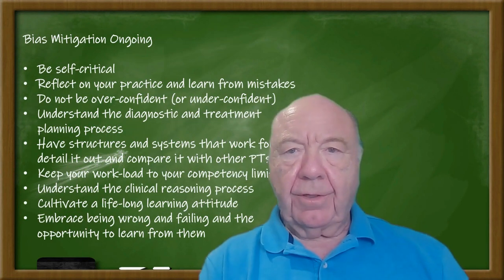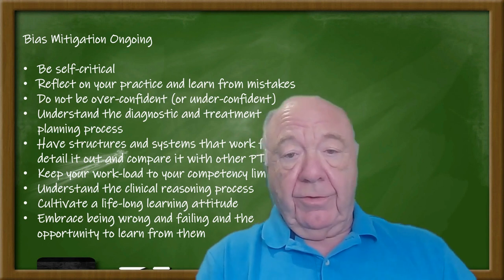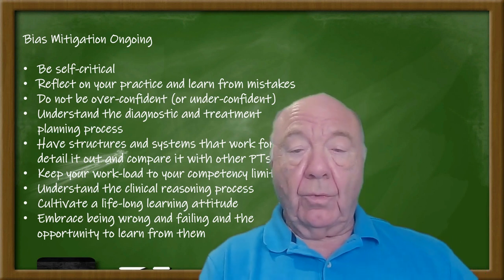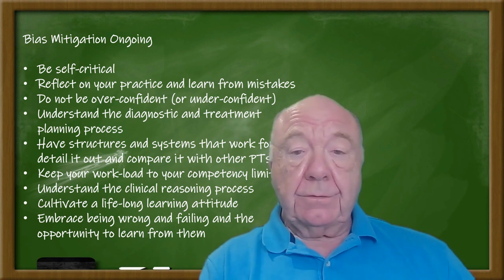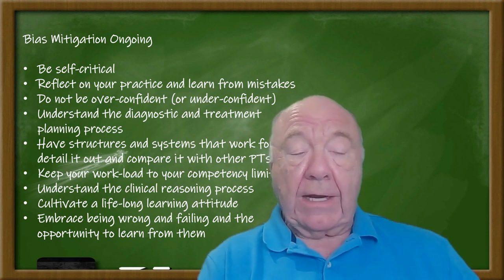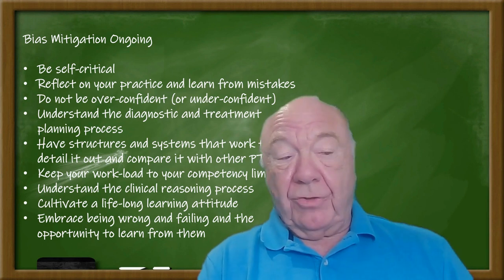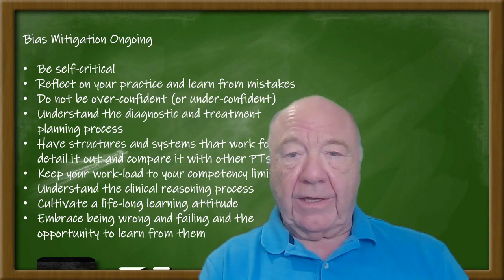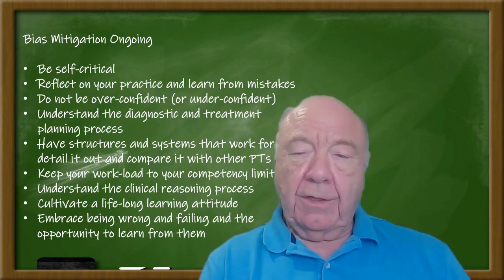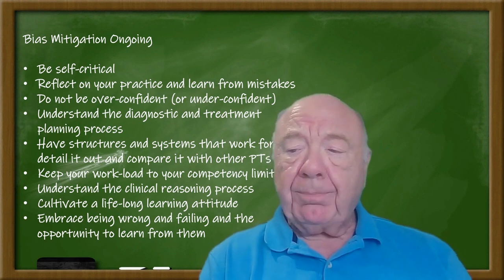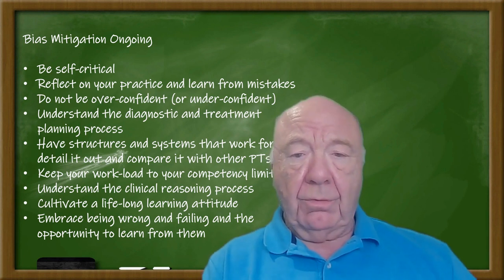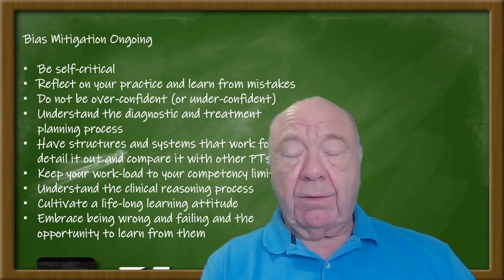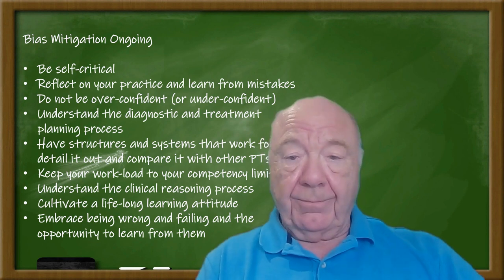Bias and error mitigation really begins in childhood, but in manual therapy these principles should have been worked into your training. The first principle is: be self-critical. You're not as good as you think you are — nobody is. Without self-criticism, you can learn nothing, absolutely nothing. Be prepared to criticise yourself and then make good on it.